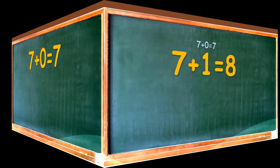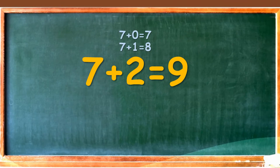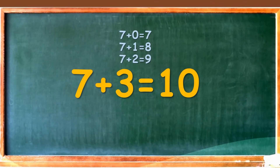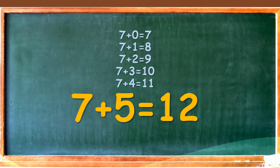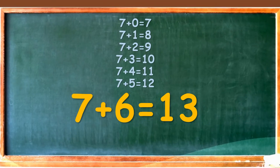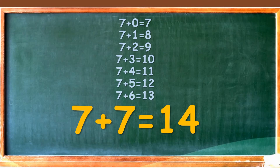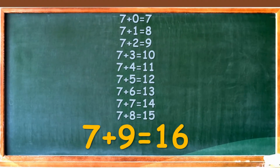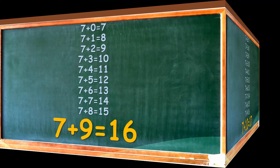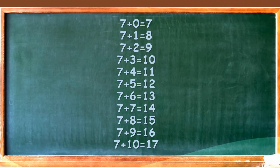7 plus 0 is equal to 7, 7 plus 1 is equal to 8, 7 plus 2 is equal to 9, 7 plus 3 is equal to 10, 7 plus 4 is equal to 11, 7 plus 5 is equal to 12, 7 plus 6 is equal to 13, 7 plus 7 is equal to 14, 7 plus 8 is equal to 15, 7 plus 9 is equal to 16, 7 plus 10 is equal to 17.